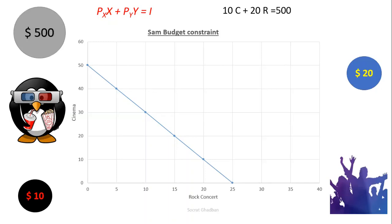Plus 20, which is the $20. And R is the quantity demanded or consumed, it means the tickets to the rock concert, equal $500, which is the income. And Sam, he has to make the choice how much to consume or how many times to go to the cinema and how many times to go to the rock concert.